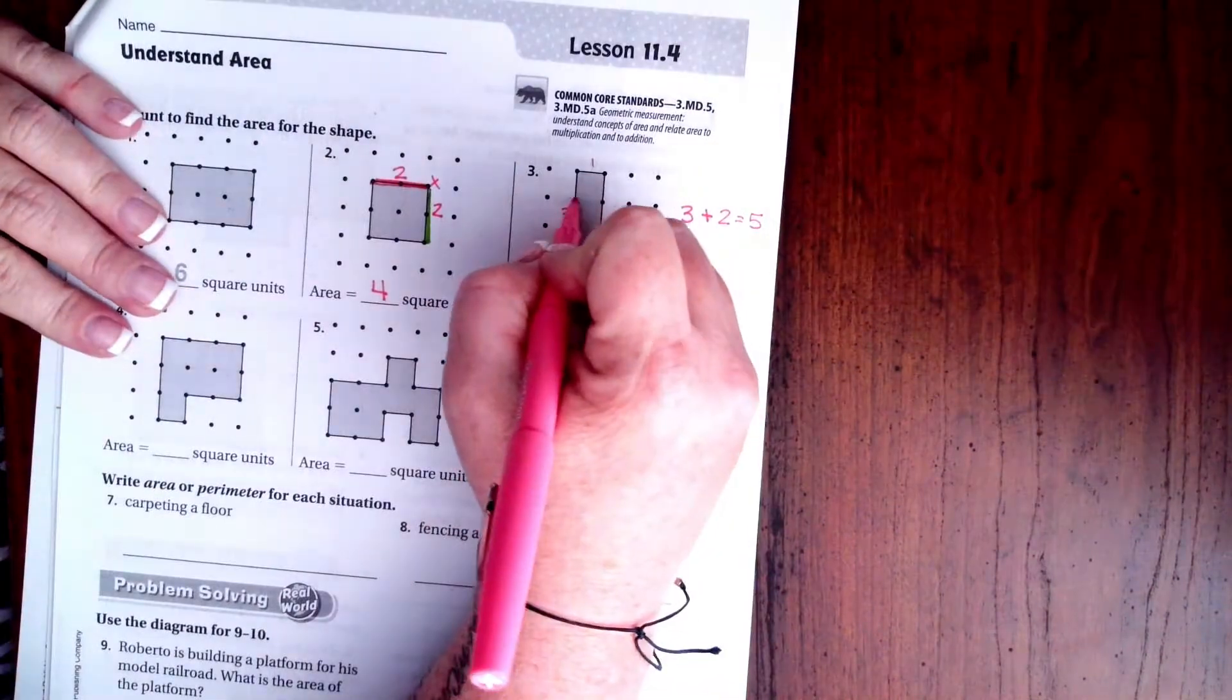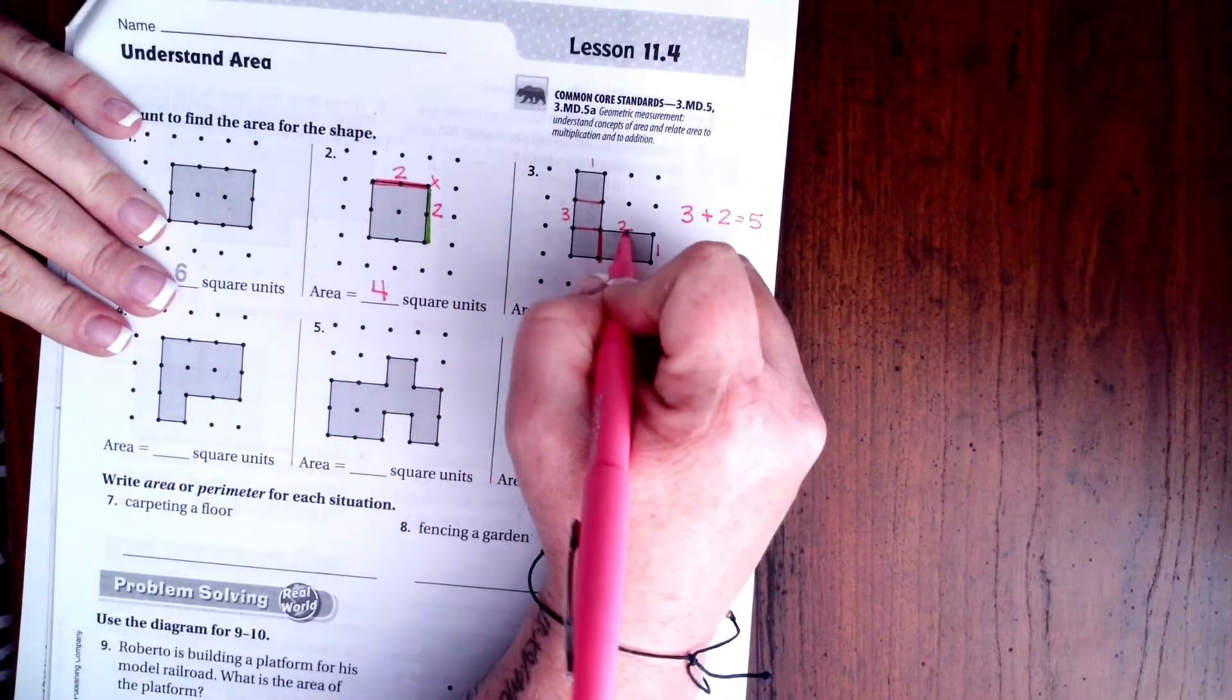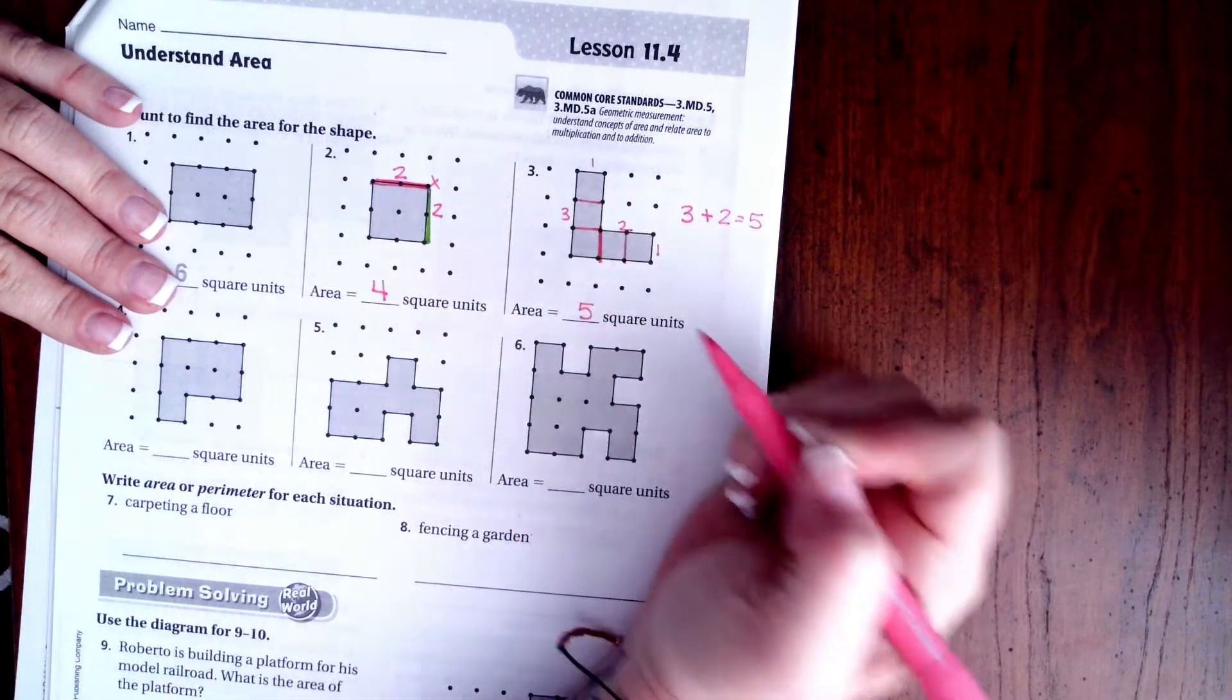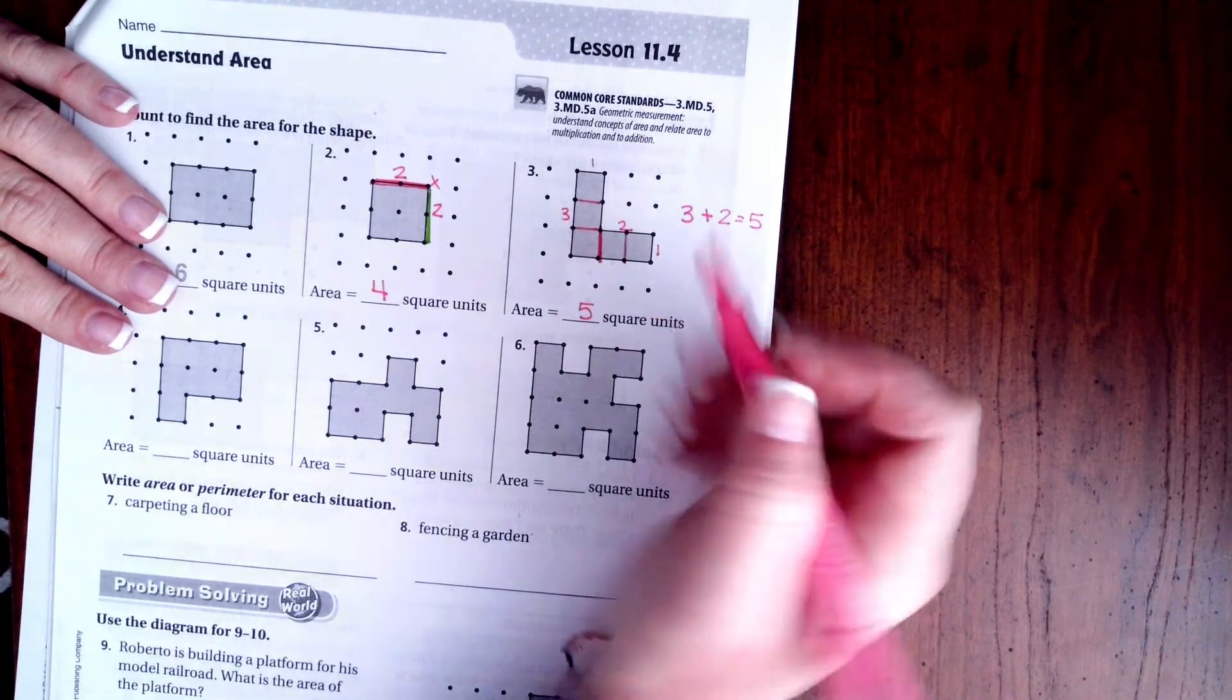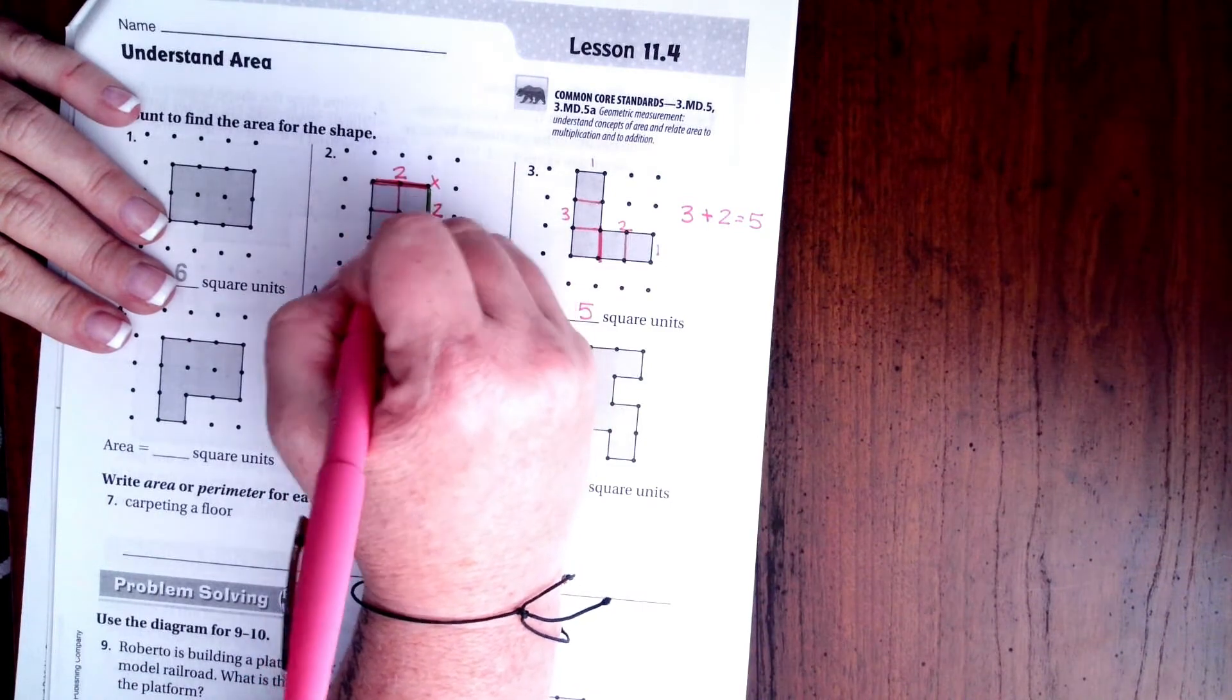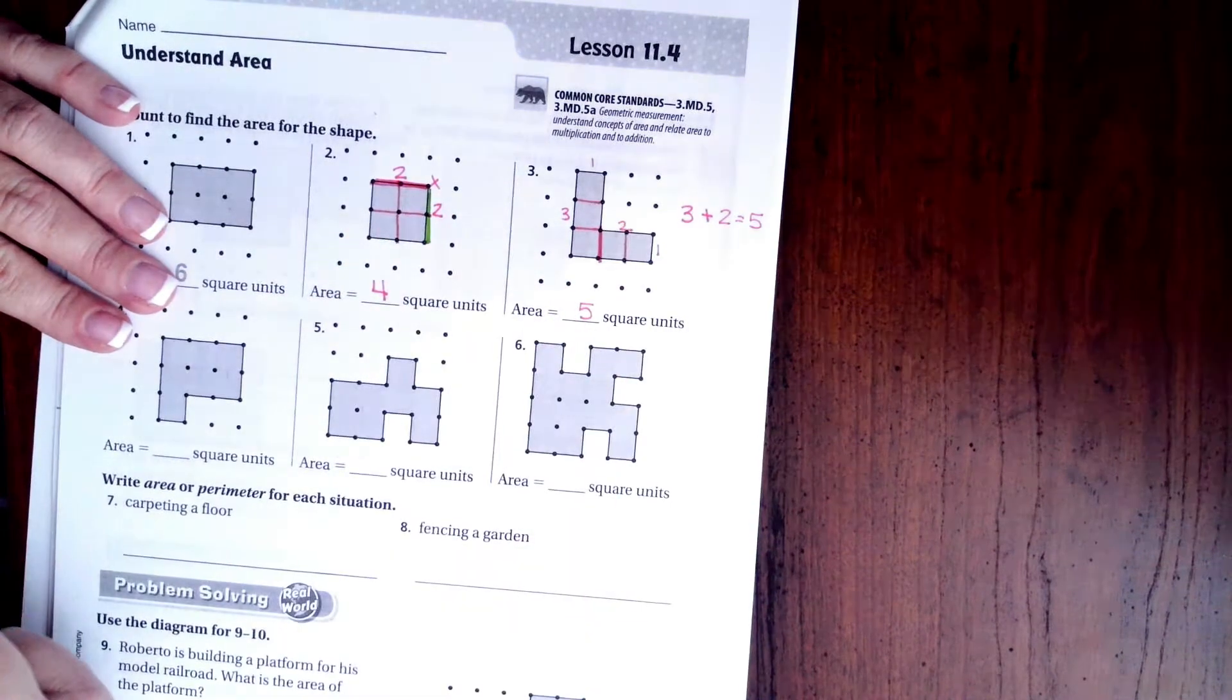You need to see, when I do this, if I were to split this up, I would have 1, 2, 3, 4, 5, 5 units. Same thing with this one. If I were to split it up, I would have 1, 2, 3, 4 units.